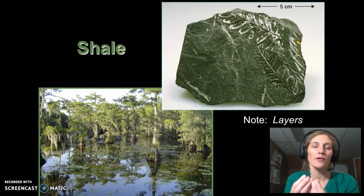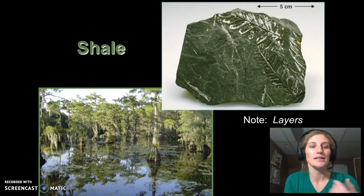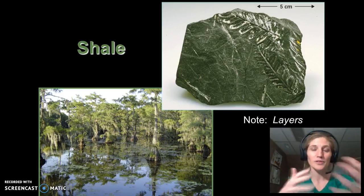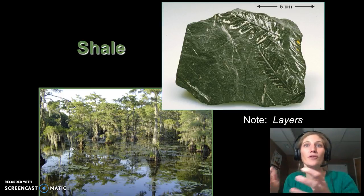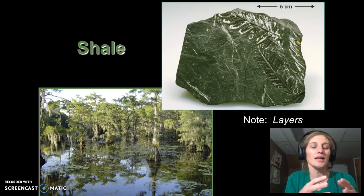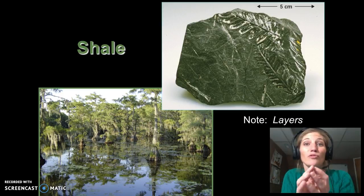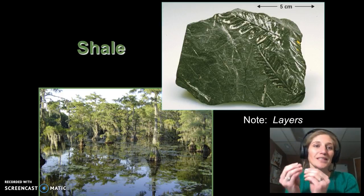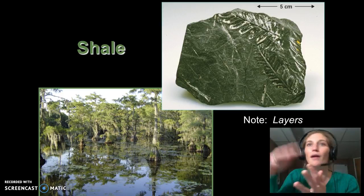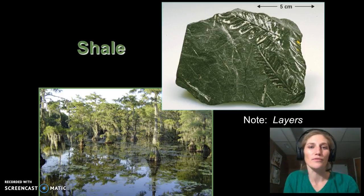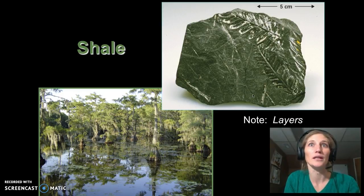When we have fine grain particles, it tells us the area of deposition was very quiet — associated with swamps, lagoons, the deep oceans, places where there's not a lot of current to stir things up or carry heavier particles. Particle size tells us about transportation because it takes a lot of energy to move big things; clay-sized particles can be carried by wind or water over very long distances. The image here shows shale with a nice fossil impression of fern leaves.